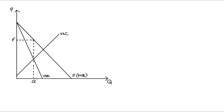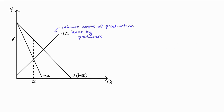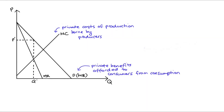On the diagram I have here on the screen I just have a standard monopoly outcome, so our monopolist produces Q star units and sells each unit for P star. What's important to know about this diagram is that the curves here that track the cost of production — that's our marginal cost MC — and our benefits of consumption — that's tracked by demand, our marginal benefit or MB — well these curves only cover what we call the private costs of production and private benefits to consumption. So marginal cost tracks the private costs borne by the producer when they produce a good, and our marginal benefit curve tracks how much benefit is afforded to a consumer when they consume a good.